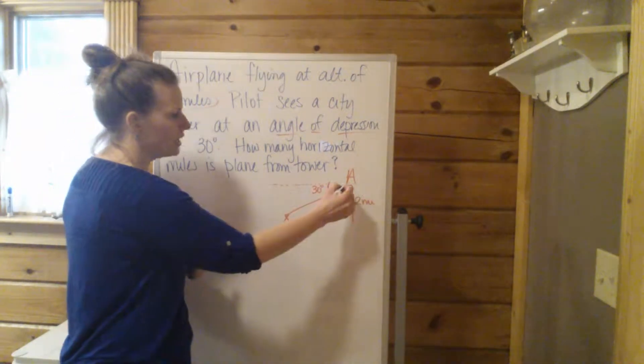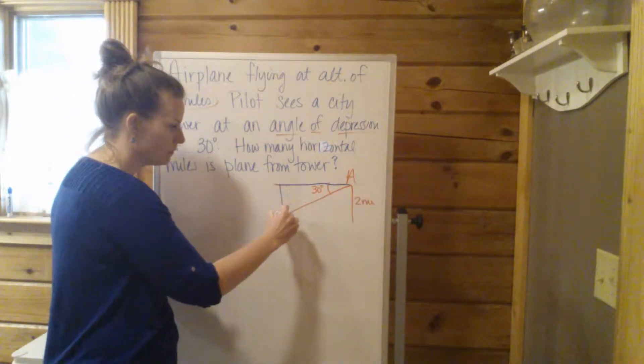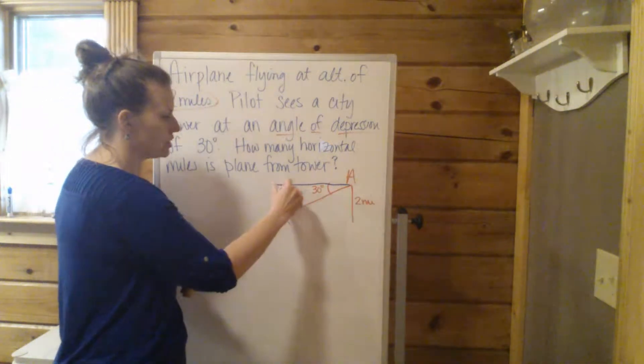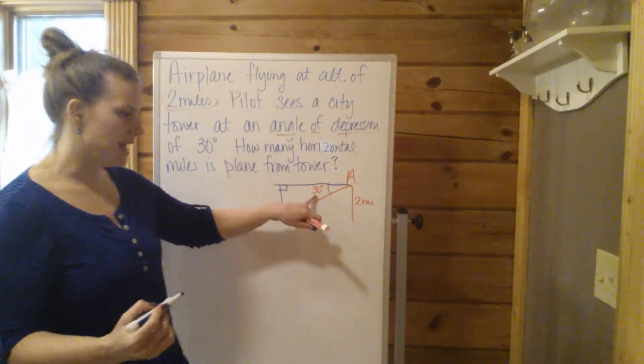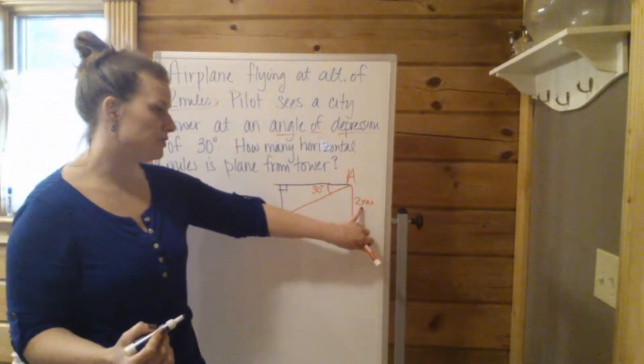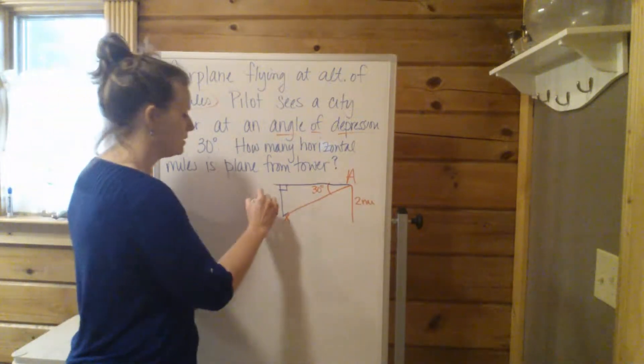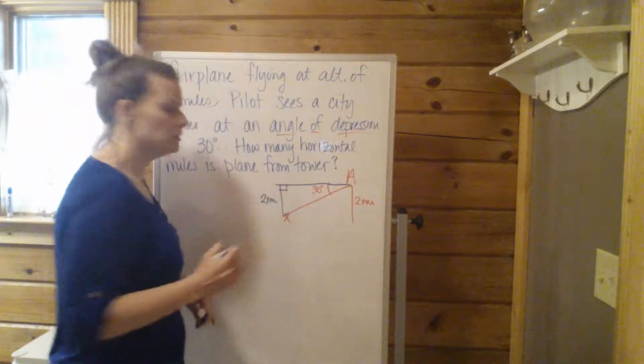We can draw this triangle using this horizontal line here. There's your right triangle containing the 30 degree angle. Now understand that this two miles is the same as this over here.